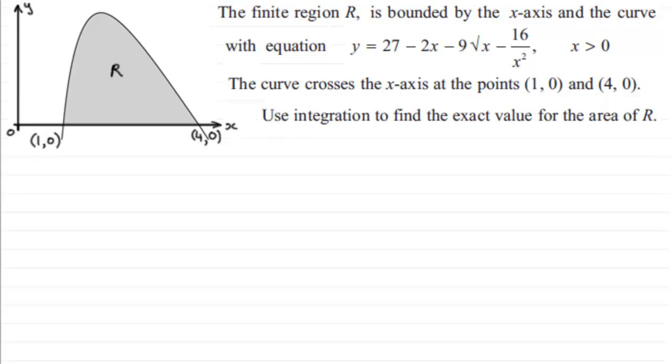Now what we've got here is an example where we've got to calculate the exact value of the area of this region given by R, bounded by the curve y equals 27 minus 2x minus 9 root x minus 16 over x squared, where x is greater than zero.